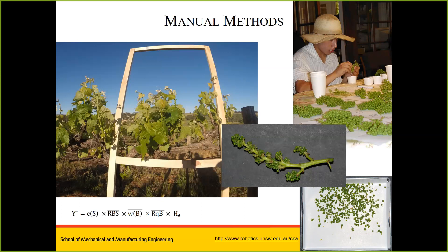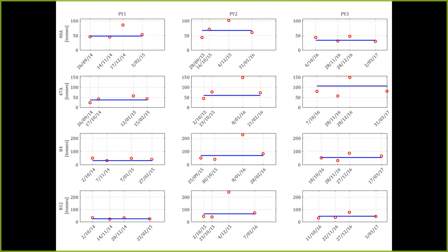We have some solutions to show you for automating that process and making things easier and quicker for farmers. In the next slide I'll show some very raw results across the three years — each column is one year of the project — where we've used best practice manual yield estimations at four different stages: shoot stage, immediately prior to flowering, pea size to veraison, and immediately prior to harvest.